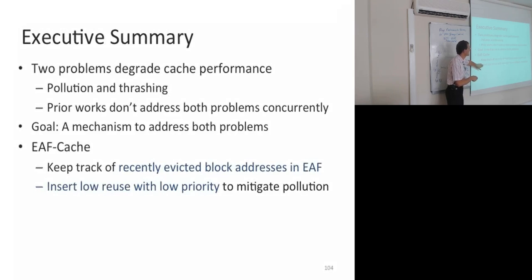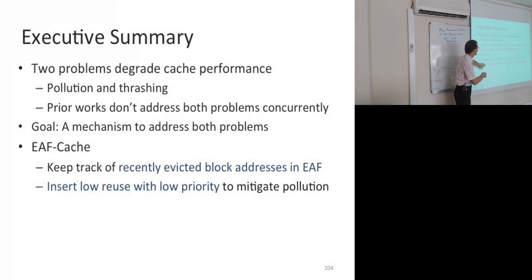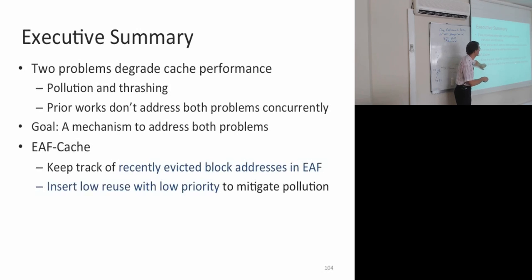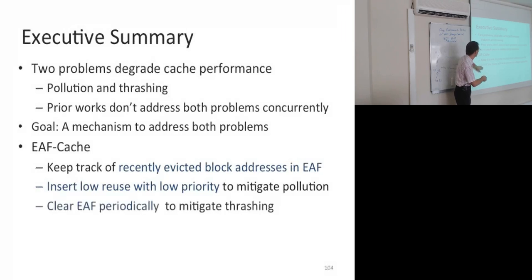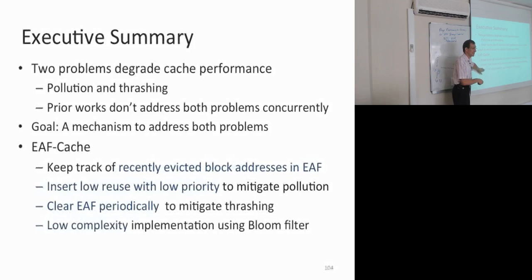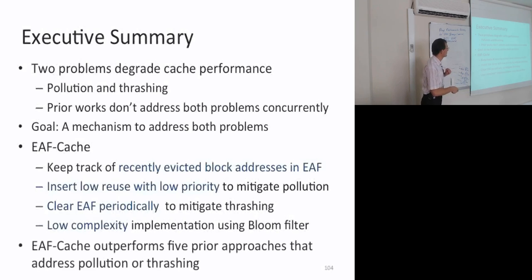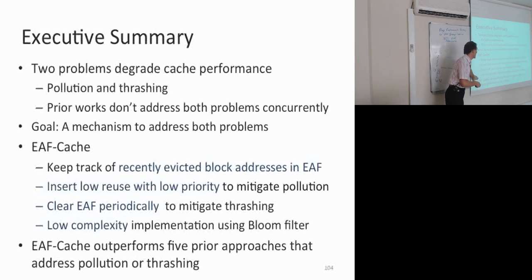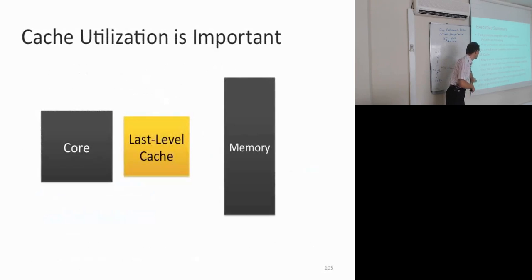These recently evicted block addresses form a reuse predictor. If you actually access blocks that were recently evicted, you predict they're going to be high reuse. Otherwise, you predict that everything not within this filter is going to be low reuse, and we put that into the cache with low priority. Everything else we put with high priority if something hits there. We periodically clear the evicted address filter to mitigate thrashing. This has low complexity implementation using a Bloom filter, and outperforms five state-of-the-art approaches.